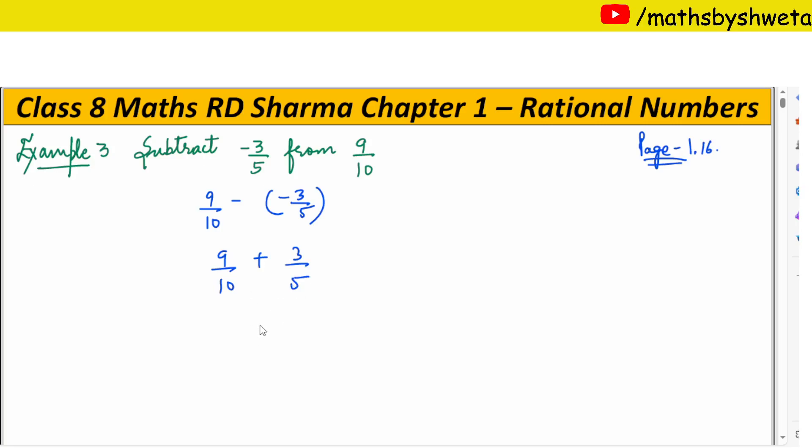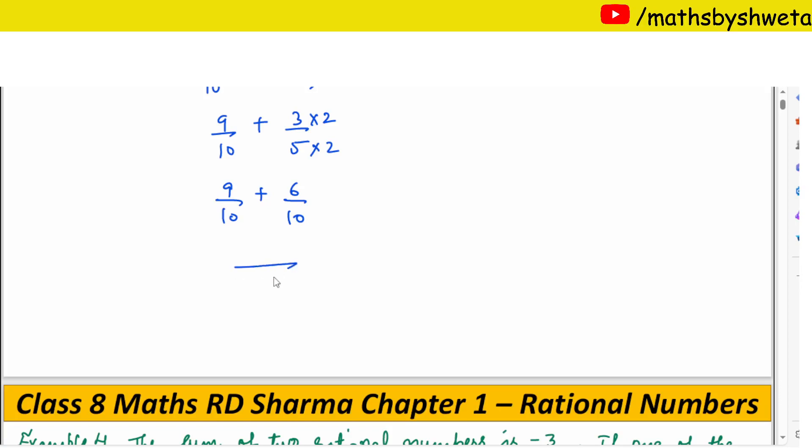Now, this is not possible. Why? Because it is not the same. For the same I have the same numerator and denominator 2 by multiply. 9 upon 10 plus 3 to 6 upon 10. Now, this is the same. It will be solved 9 plus 6, answer 15 upon 10.